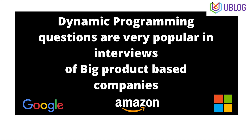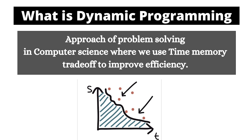Believe me, dynamic programming is fairly simple, though it sounds very difficult. Many tech companies like to ask DP questions in interviews, so it's very important for you to know how to solve problems using DP. Dynamic programming is a very important approach to problem solving in computer science where we use the idea of time-memory trade-off to improve efficiency. This is nothing but a time-memory trade-off to improve efficiency.